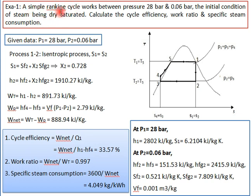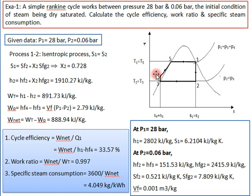Here we have a simple Rankine cycle where the steam is dry saturated. On the TS diagram, process 1 to 2 is turbine expansion, 2 to 3 is the condenser where constant pressure heat rejection occurs, 3 to 4 is isentropic compression in the pump, and 4 to 1 is constant pressure heat addition in the boiler.